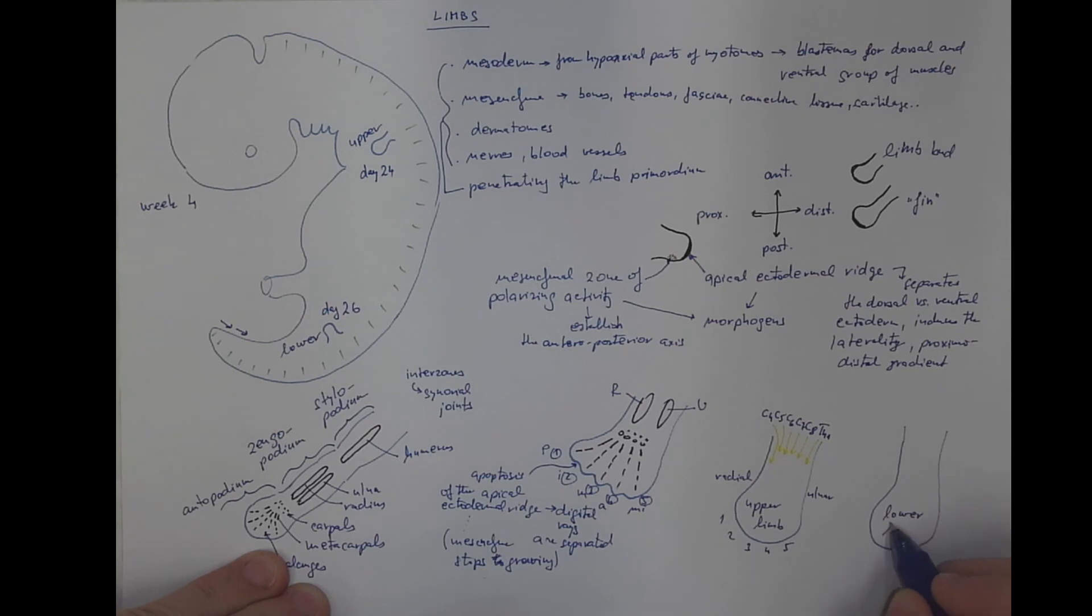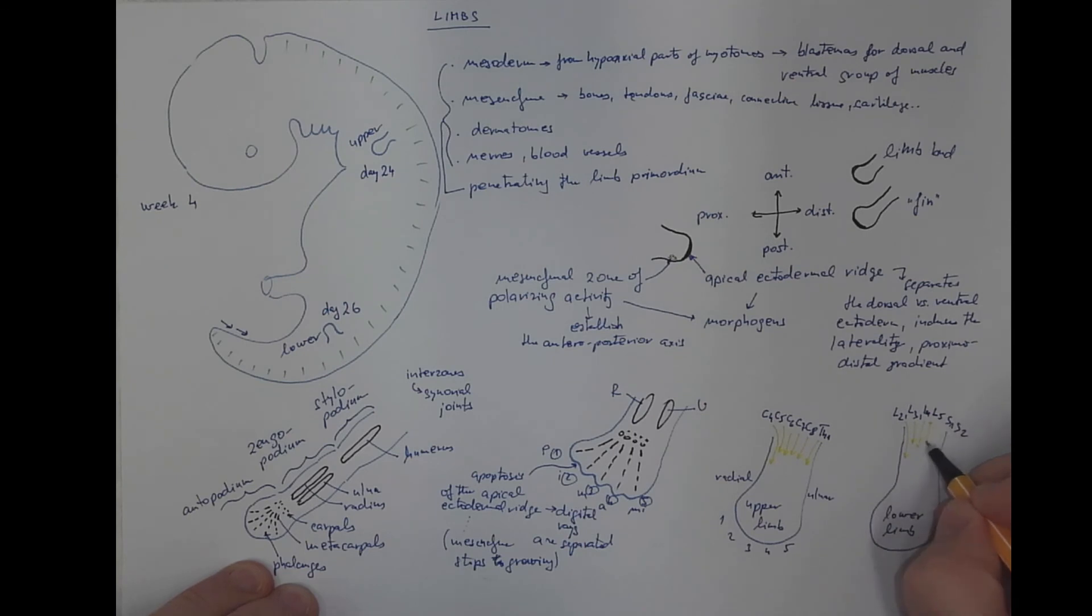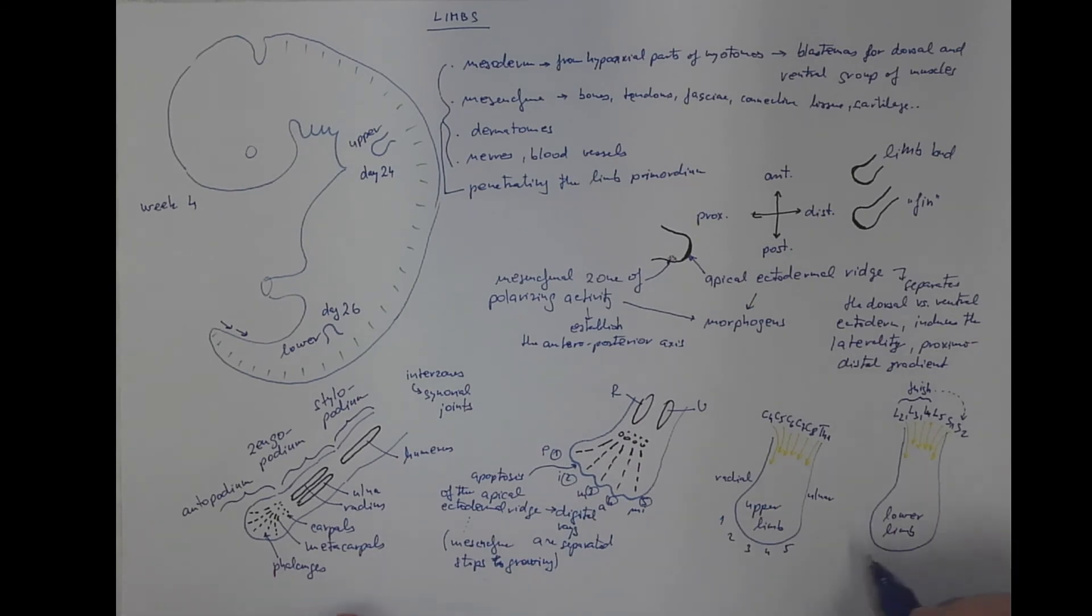For the lower limb, there is the L2, L3, L4, L5, S1 and S2 spinal cord segments providing nerve supply to the lower limb. For example, just an example speaking only about the sensory innervation, this will be for the thigh. And also the S2 is for the thigh.